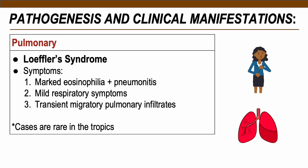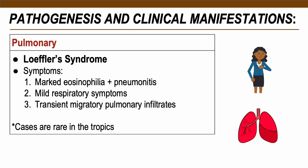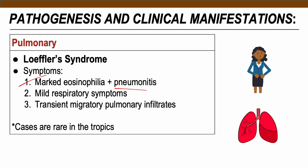Pulmonary hookworm infection results when larval migration through the lungs is abundant, causing bronchitis and pneumonitis with minute hemorrhages, eosinophils, and leukocytic infiltration. Symptoms are similar to Ascaris-Loeffler syndrome — marked eosinophilia, lung inflammation, mild respiratory symptoms such as coughing and difficulty breathing, and transient migratory pulmonary infiltrates. Cases are rare in tropical regions like the Philippines.